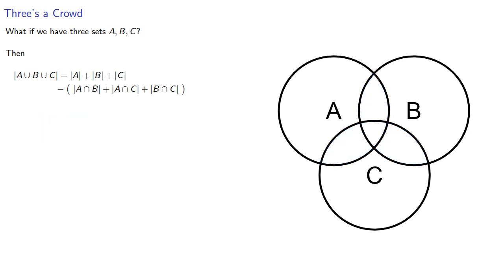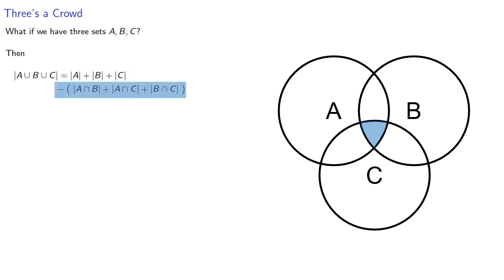But now consider something that's in the intersection of all three sets. Anything in this intersection would have been counted three times initially, but then we would have subtracted three times for each of the pairwise intersections, so we need to add it back in to get the correct count.